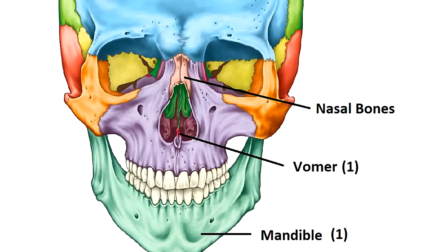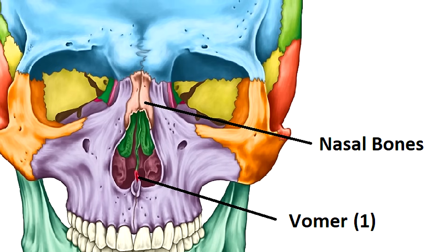Next we have the nasal bones, which are the easiest facial bones to remember because they make up the bridge of the nose. The word nasal literally means 'related to the nose.' If you get no other bones correct on your anatomy test, you should at the very least get the nasal bones and the frontal bone correct — because those are just handed to you.